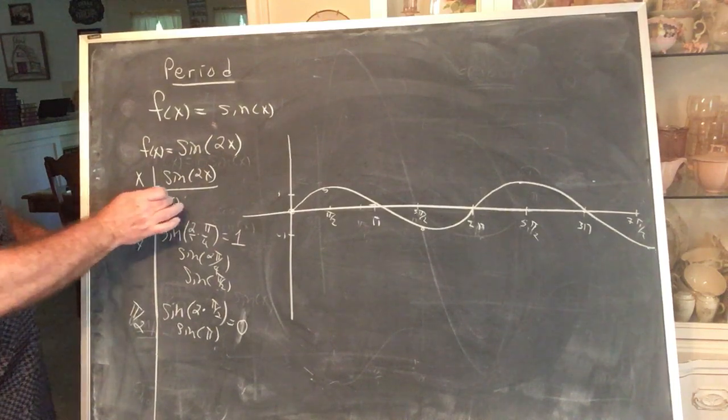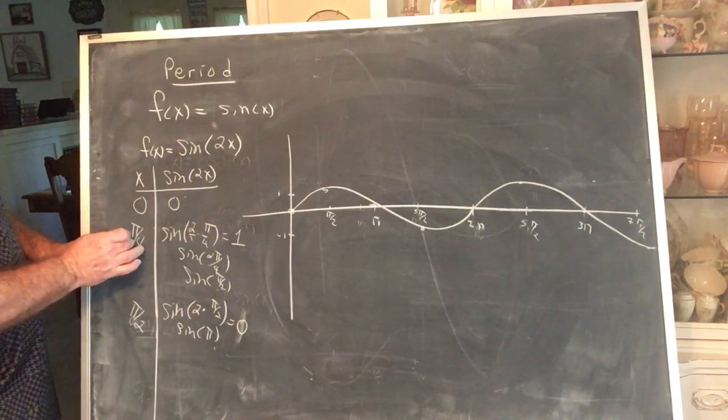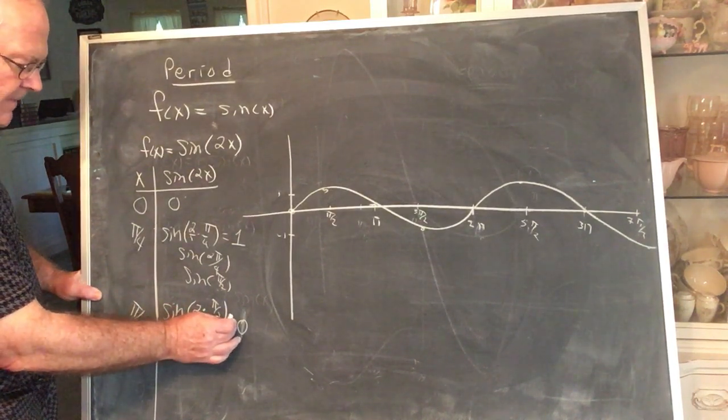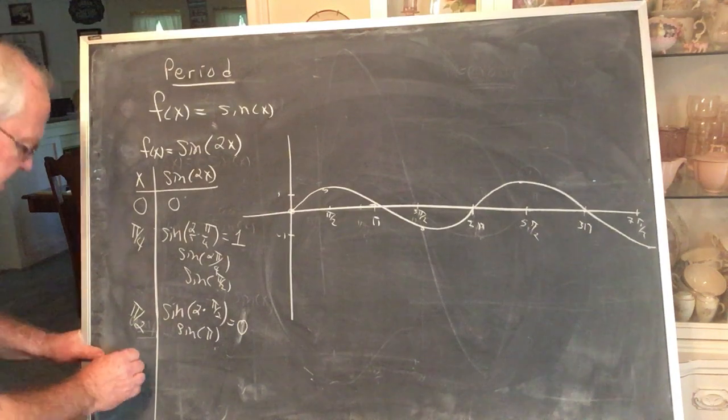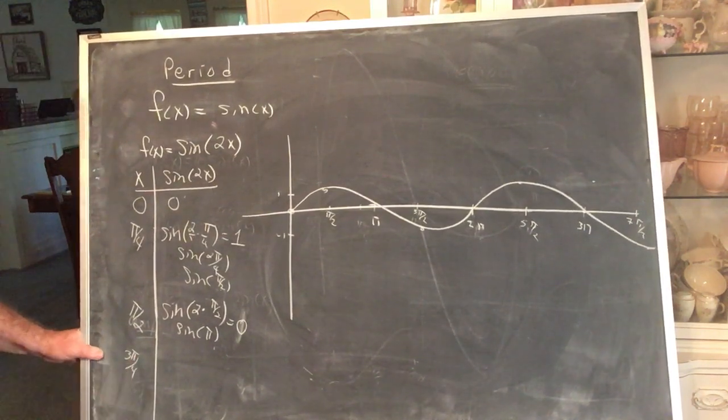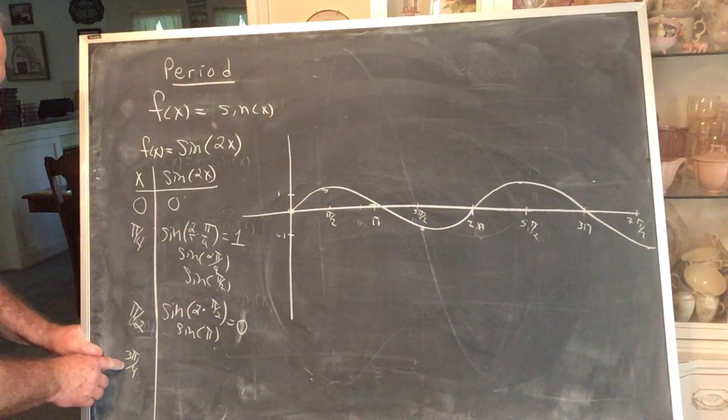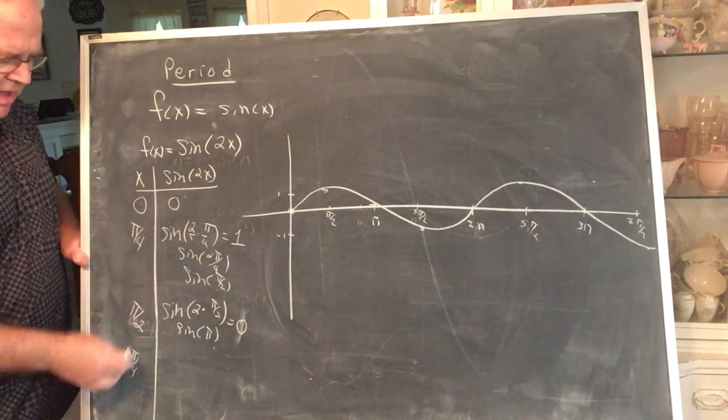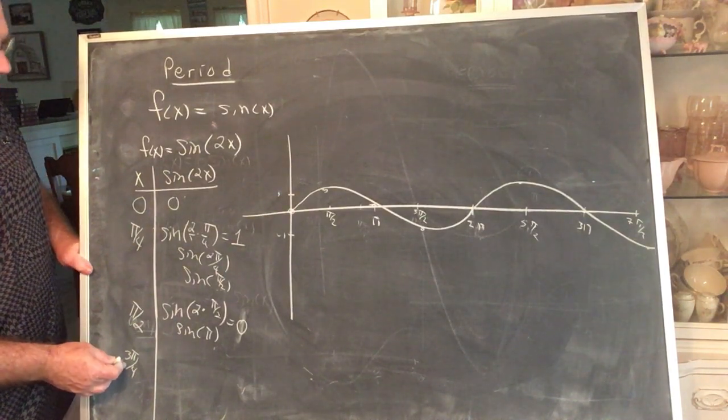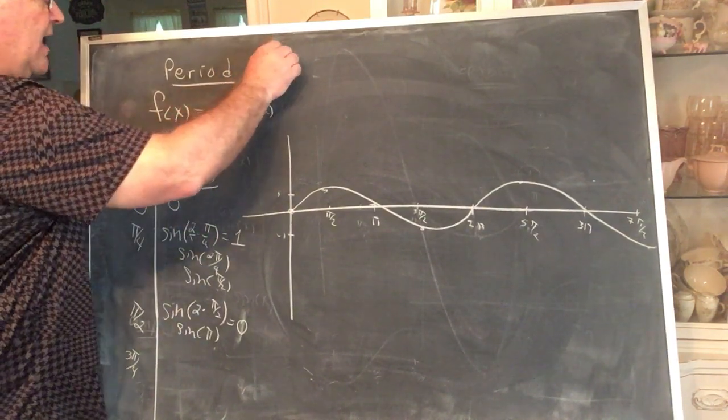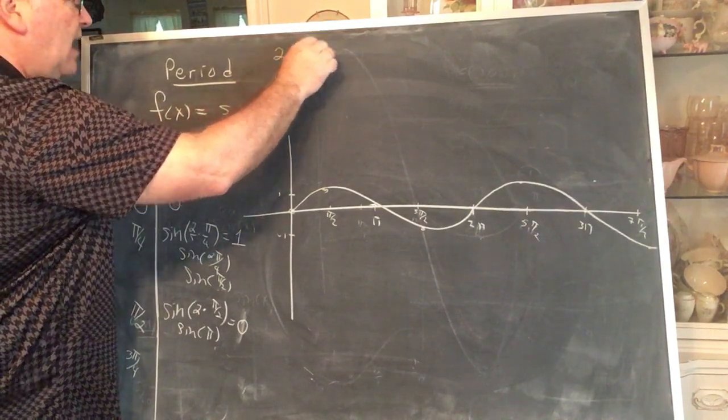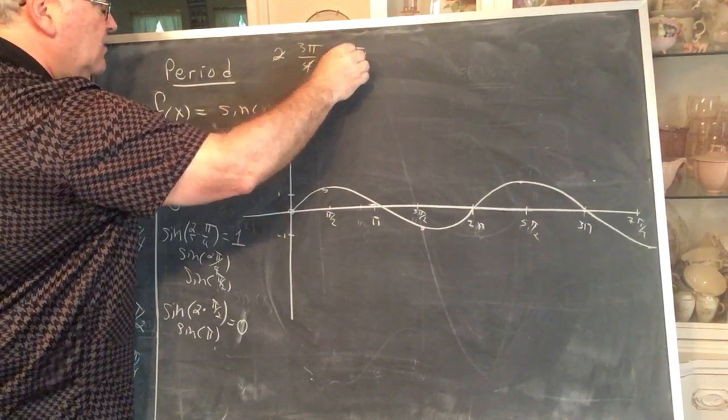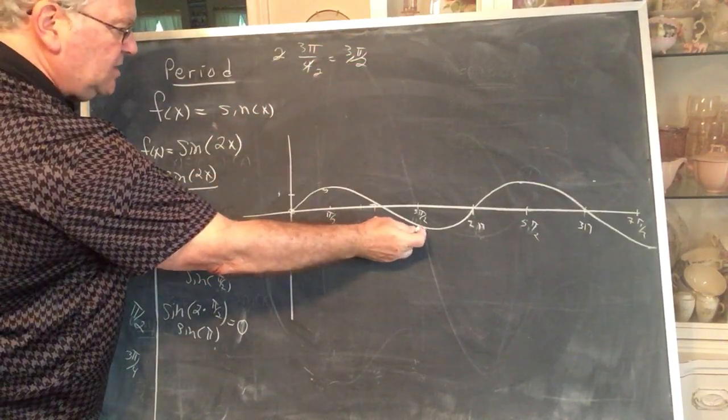So at x equals 0, the function value is 0. At x equals π over 4, the function value is 1. At x equals π over 2, the function value is 0 again. At x equals 3π over 4. Now, be careful. 3π over 4. The first thing we do is double. What is 2 times 3π over 4? I'm going to go off to the side. 2 times 3π over 4. Well, the 2 cancels with the 4. This is 3π over 2. And I know what sine of 3π over 2 is. That's negative 1.